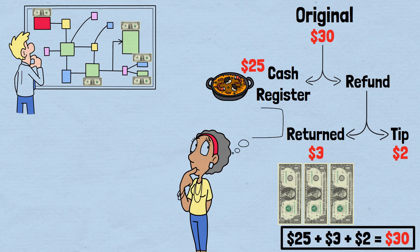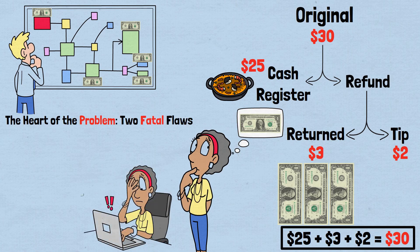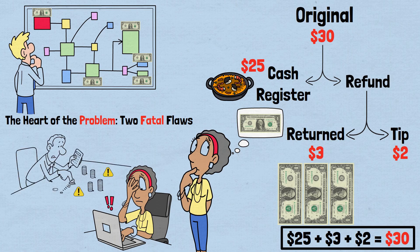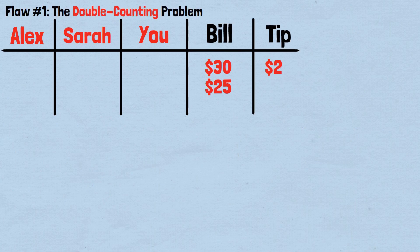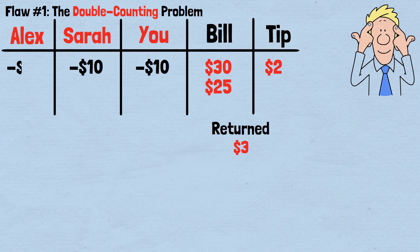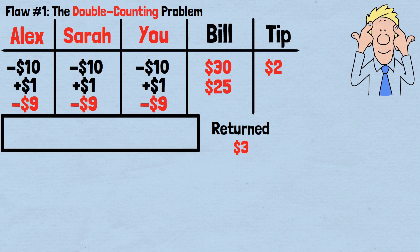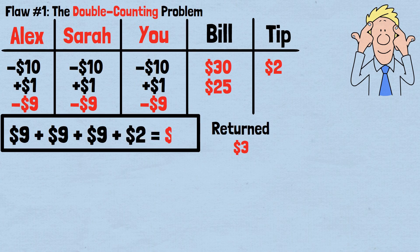So where's the disconnect? Why does the riddle make us think there's a missing dollar? There are really two huge problems embedded in this riddle's logic. Flaw number one: the double counting problem. When you originally paid $10 each, that money left your wallets and entered the restaurant system. When you received $1 back each, that $3 total came back to you, so from your perspective you effectively paid $9 each — your net payment after accounting for the refund. But in the faulty equation, 9 plus 9 plus 9 plus 2 equals $29, we're using the $9 figure, which already has the refund subtracted from it. The $3 refund is already baked into these numbers.